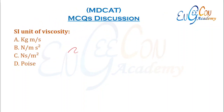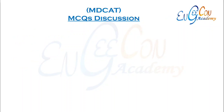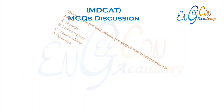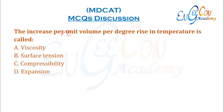The SI unit of viscosity is Newton·second per meter squared, or kg per meter per second. So C is the correct option. The increase in volume per unit volume per degree rise in temperature is called expansion.